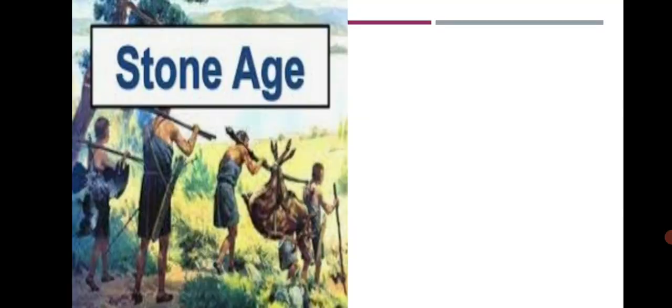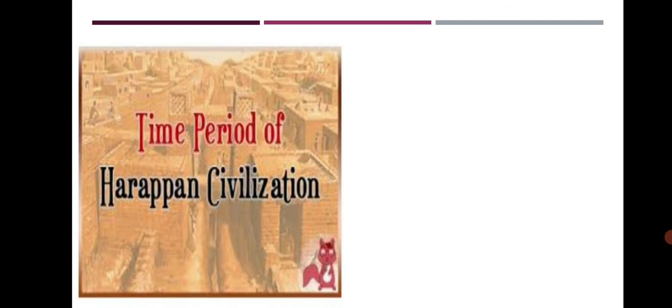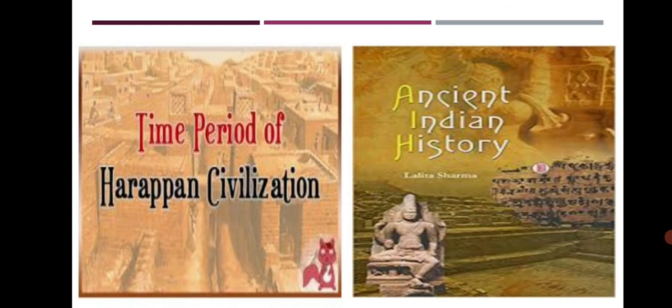Till now we have learnt in brief about the history of human civilization from the Stone Age to the early civilizations. Next year, we shall study in detail the Harappan civilization that developed in the Indian subcontinent. We shall also study the ancient history of India. This way, we have completed Chapter 10 Historic Period and also the EVS 2 portion for Standard 5th.